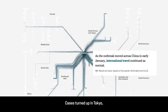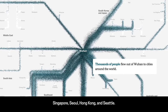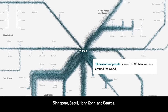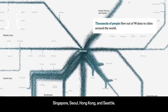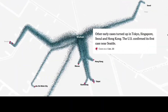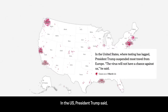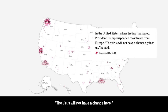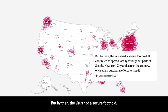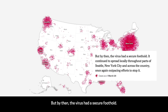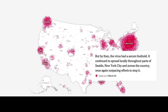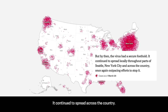Cases turned up in Tokyo, Singapore, Seoul, Hong Kong, and Seattle. In the US, President Trump said the virus will not have a chance here. But by then, the virus had a secure foothold. It continued to spread across the country.